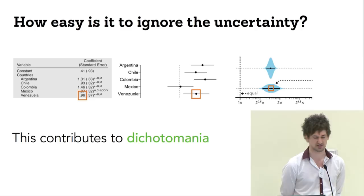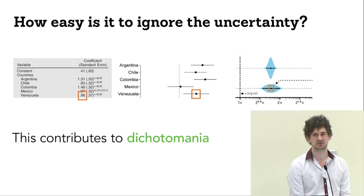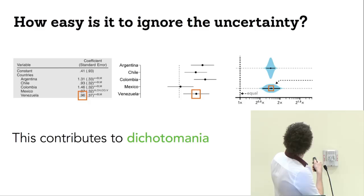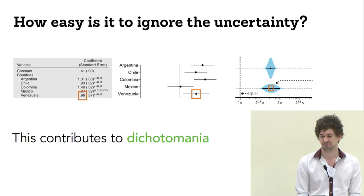This contributes to what statistician Frank Harrell likes to call dichotomania — the unending ability of human beings to dichotomize things and ignore uncertainty. What happens is I take all the intervals that didn't overlap zero and I publish those and I don't publish that one, and then we get publication bias. So this is a problem.